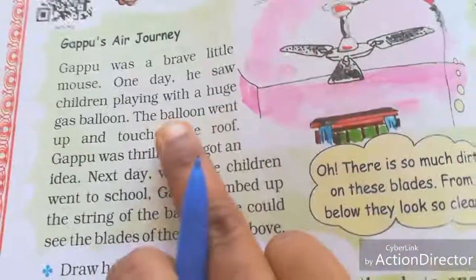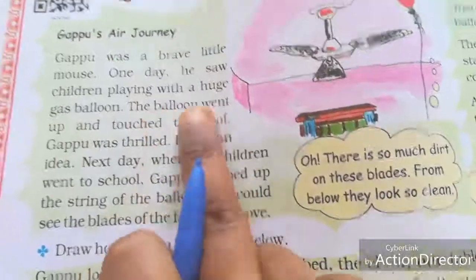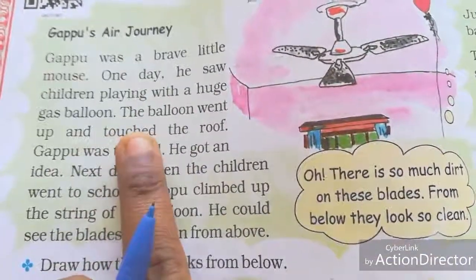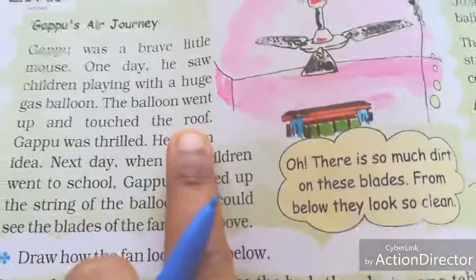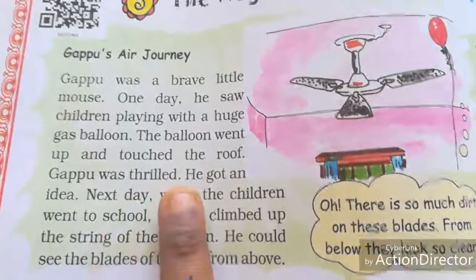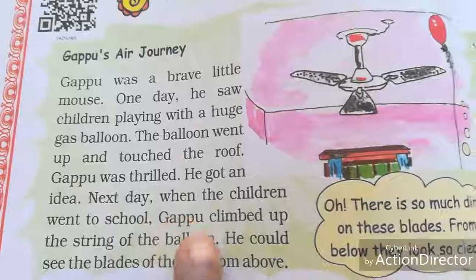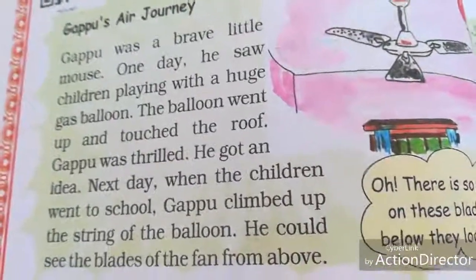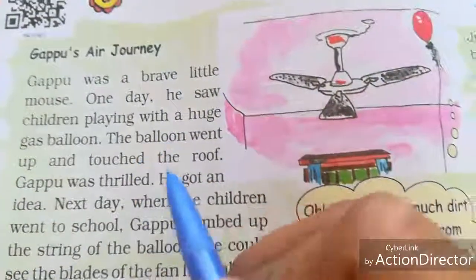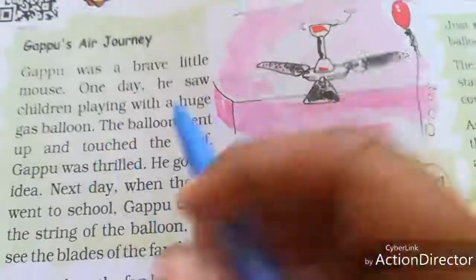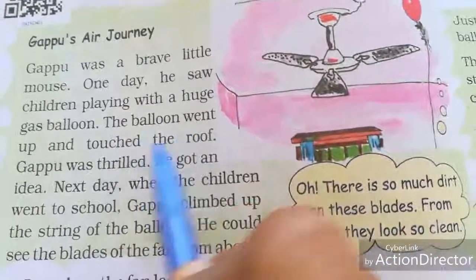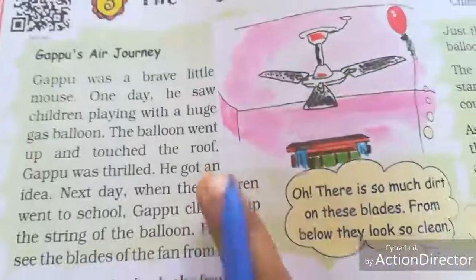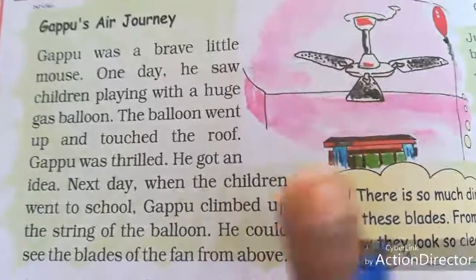One day, he saw children playing with a huge gas balloon. The balloon went up and touched the roof. Gappu was thrilled. He got an idea. We can see gas balloons at functions, marriages, and other events — the gas balloon went up and touched the roof. Gappu was thrilled and so excited.